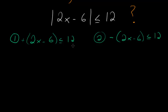So with this one here, what I can do is add 6 to each side. So I have 2x less than or equal to 18, and then divide each side by 2, and I have x is less than or equal to 9.